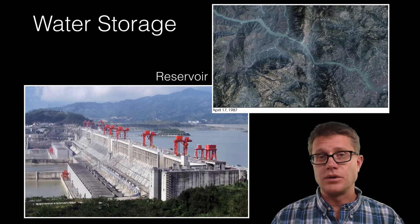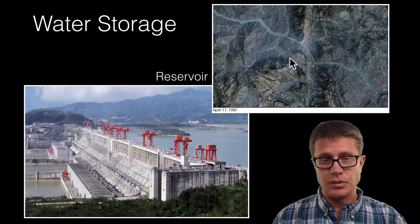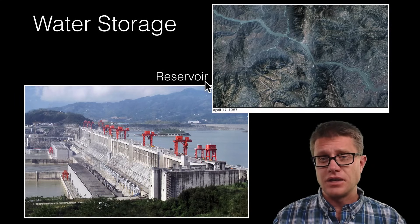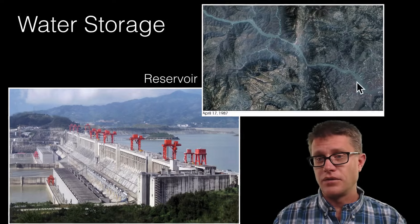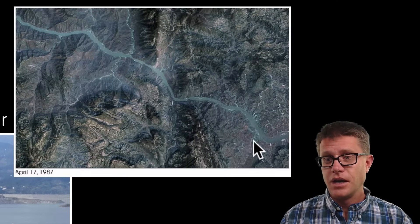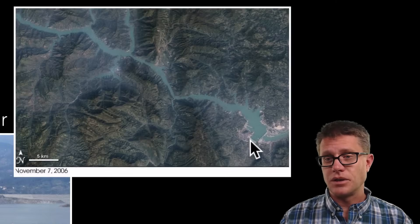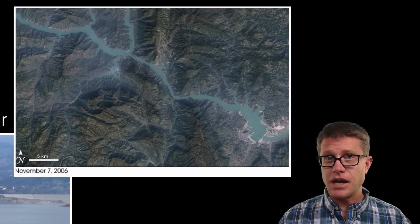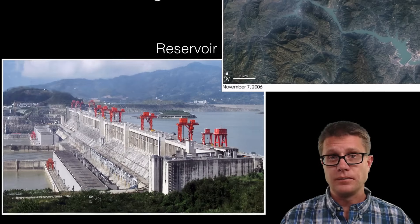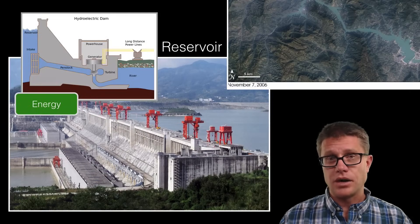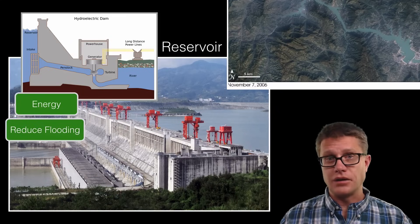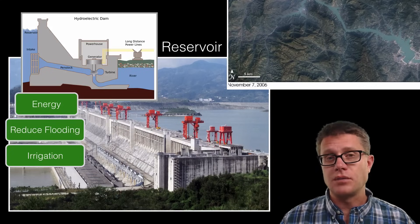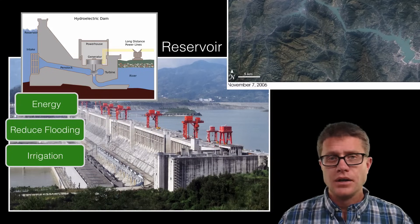Humans have started to store water — reservoirs are an example of that. A big example is the Three Gorges Dam built in China, finished in 2006. You can see what the Yangtze River looked like before, and then what it looked like after the dam was built. What is nice about that is we have water we can use at will, we can get energy by running water through a generator, control flooding downstream, and use it for irrigation. The Three Gorges Dam is also being used to increase shipping on the Yangtze River.